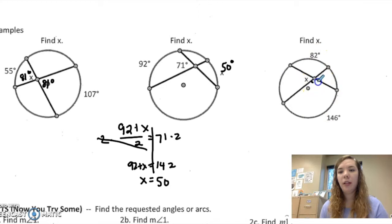So I'm going to go ahead and find this angle first. 82 plus 146 over 2 is 114.